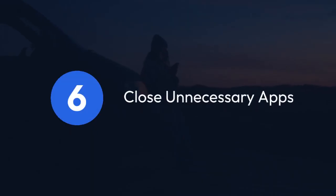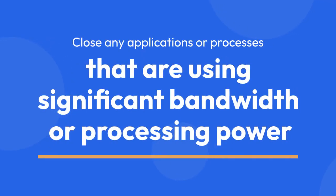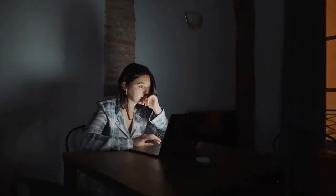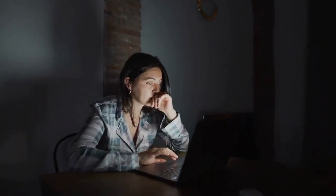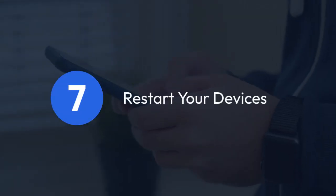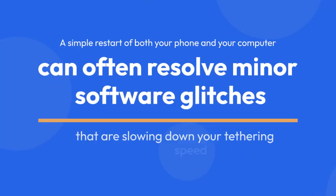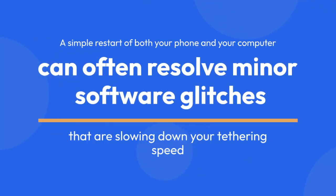6. Close unnecessary apps. Both on your phone and your computer, close any applications or processes that are using significant bandwidth or processing power. Background processes can impact the speed of your tether. 7. Restart your devices. A simple restart of both your phone and your computer can often resolve minor software glitches that are slowing down your tethering speed.